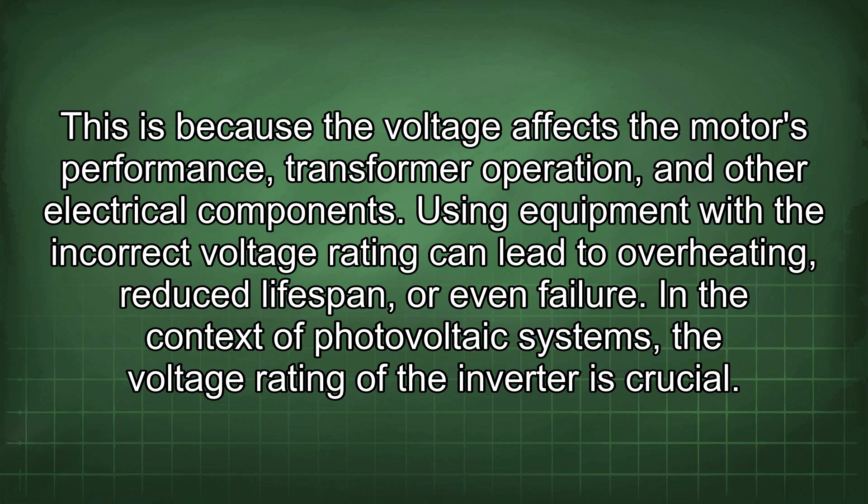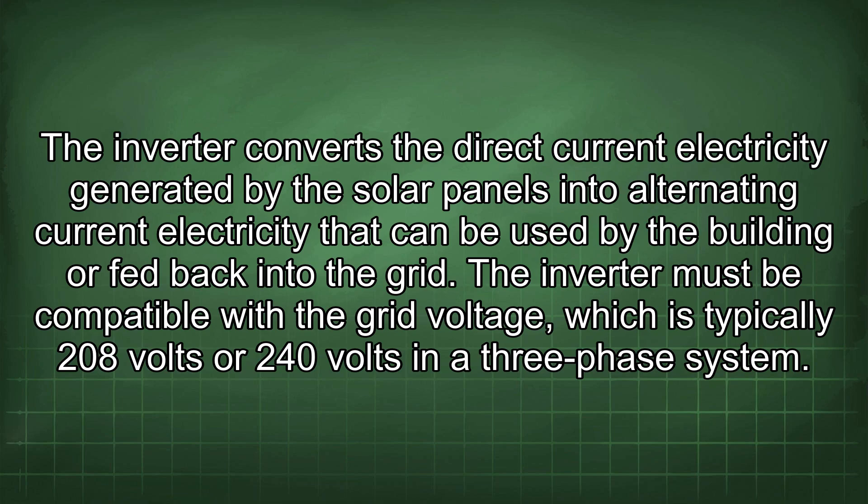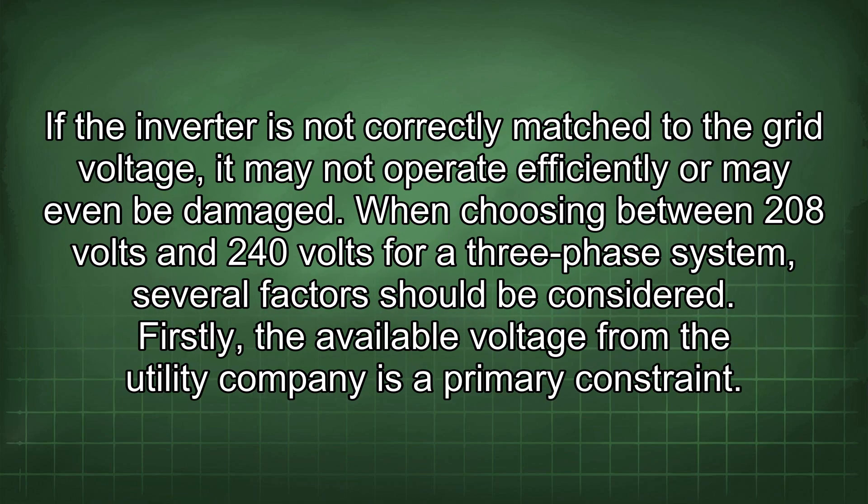In the context of photovoltaic systems, the voltage rating of the inverter is crucial. The inverter converts the direct current electricity generated by the solar panels into alternating current electricity that can be used by the building or fed back into the grid. The inverter must be compatible with the grid voltage, which is typically 208 volts or 240 volts in a three-phase system. If the inverter is not correctly matched to the grid voltage, it may not operate efficiently or may even be damaged.